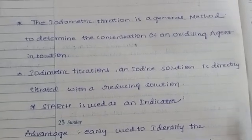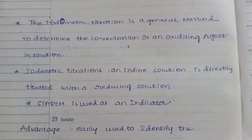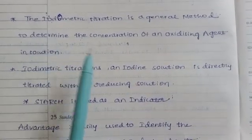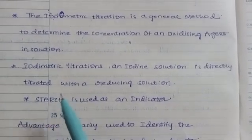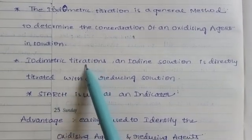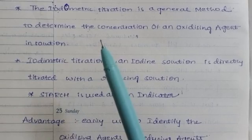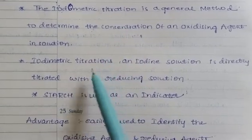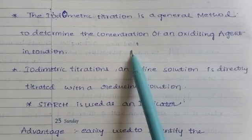Now, iodimetry. Iodimetry is the general method used to determine the concentration of an oxidizing agent in a solution. In this case, the solution could be an oxidizing agent or reducing agent. We identify which solution is used, and this is called iodimetry.